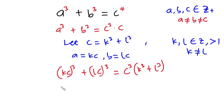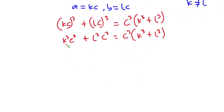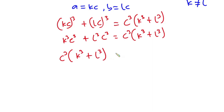Now let's simplify this. We have k to the third power times c to the third power, plus l to the third power times c to the third power, is equal to c to the third power times k to the third power plus l to the third power. On the left hand side we can factor out c to the third power, giving us c to the third power times k to the third power plus l to the third power.